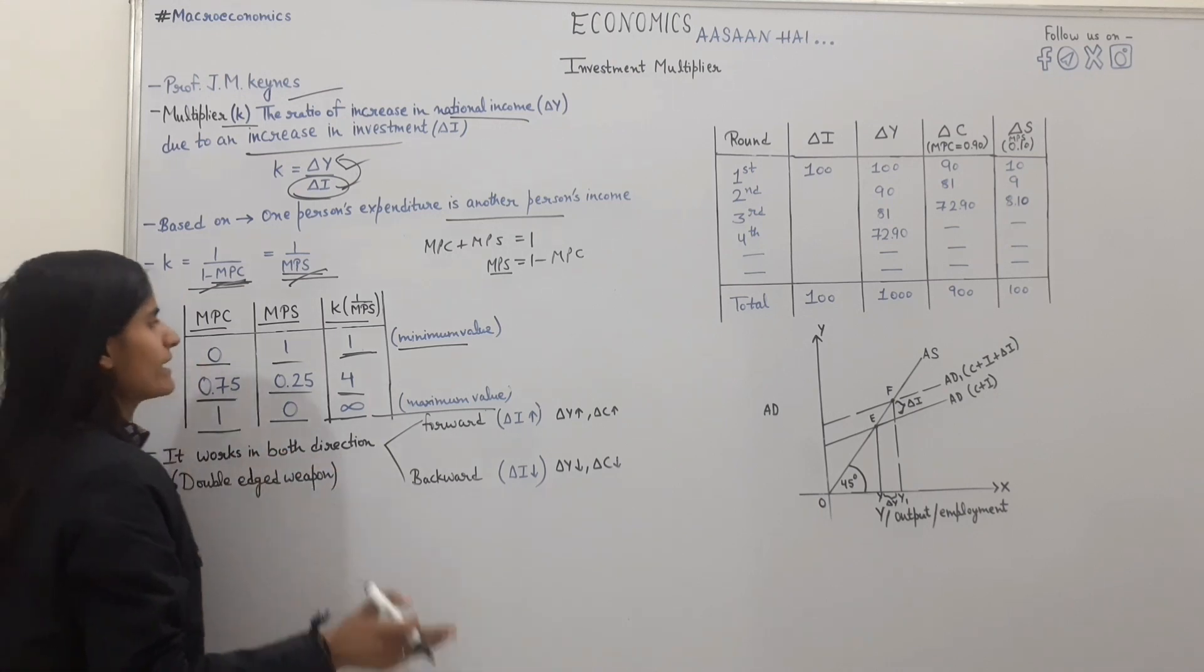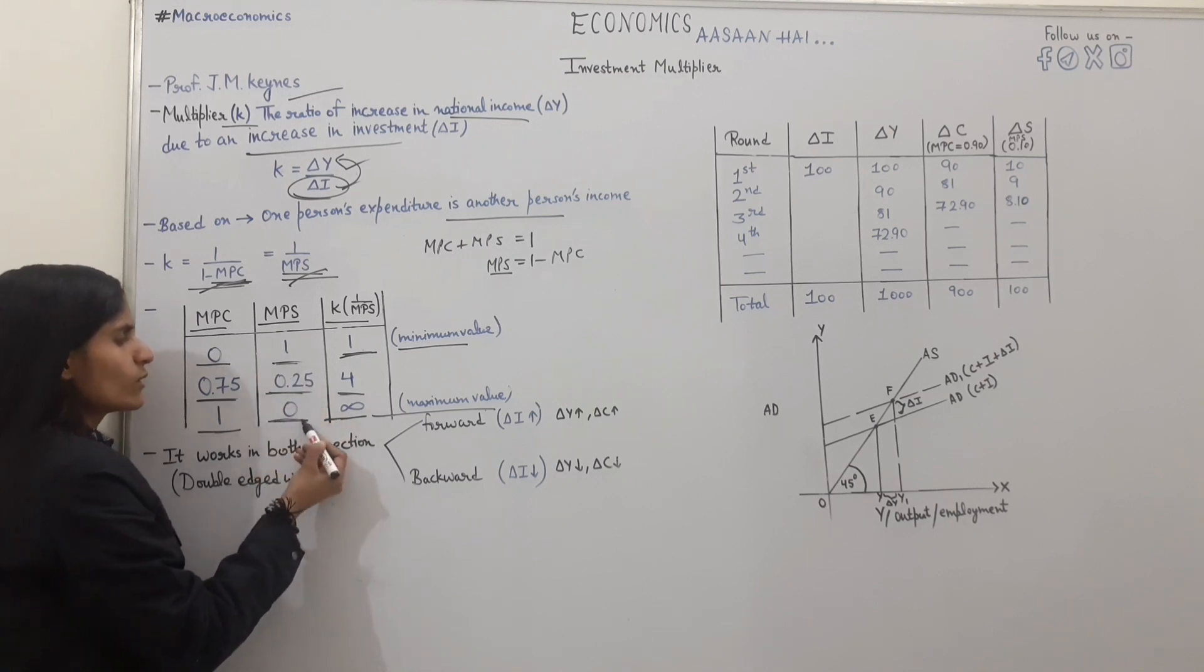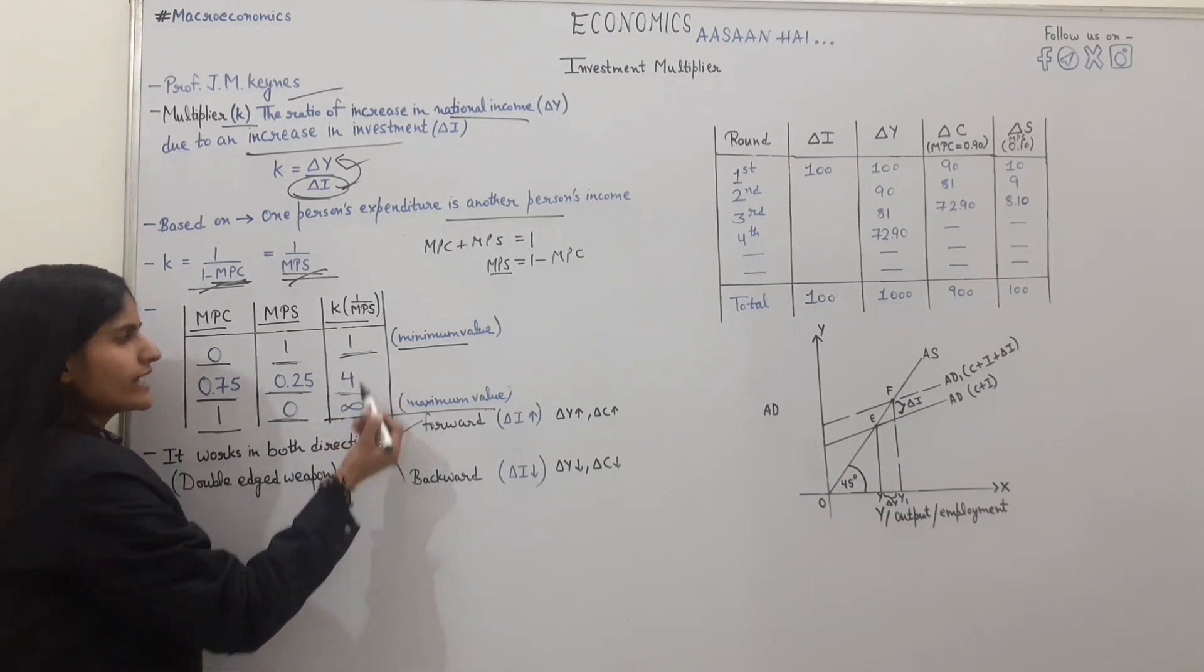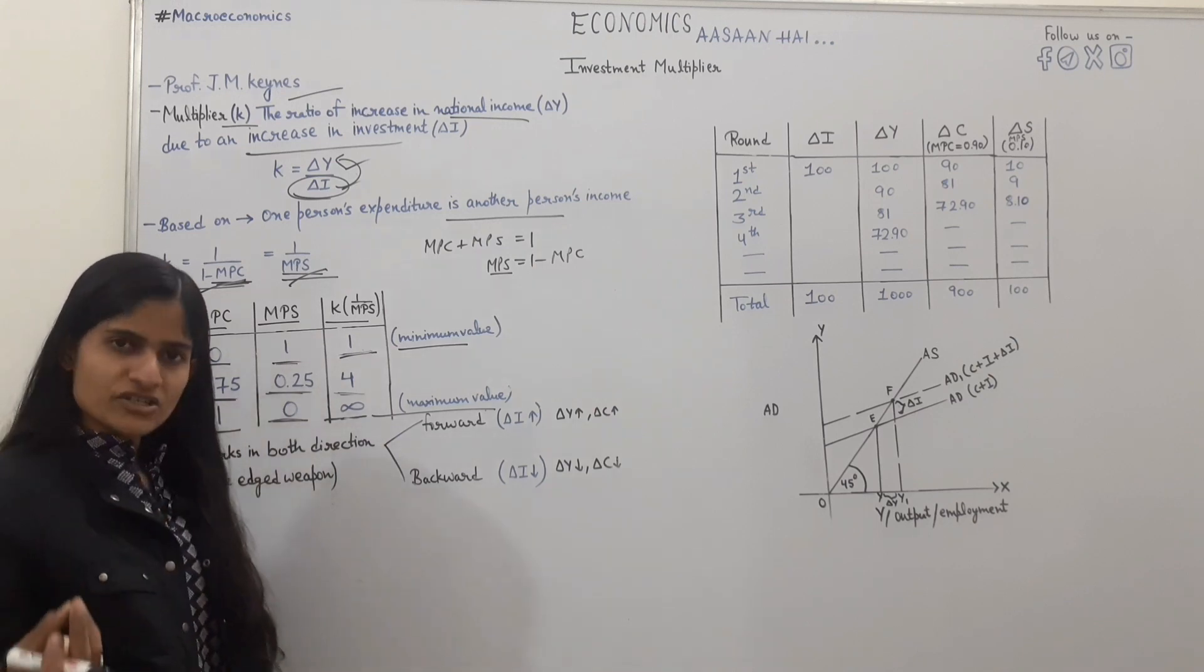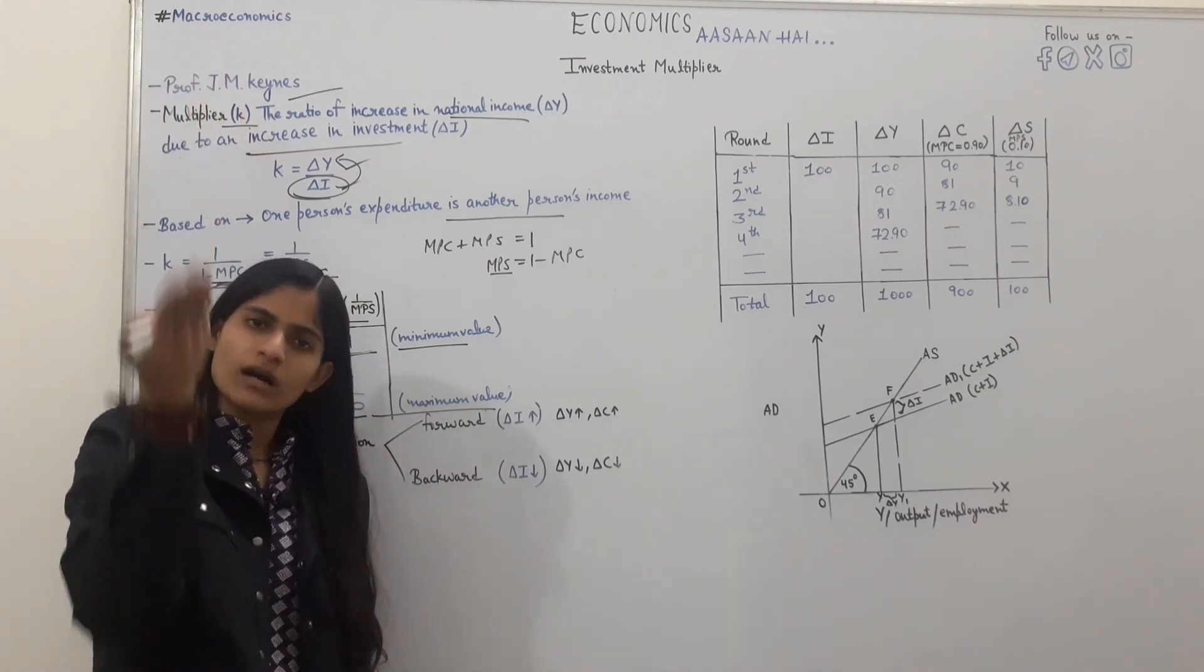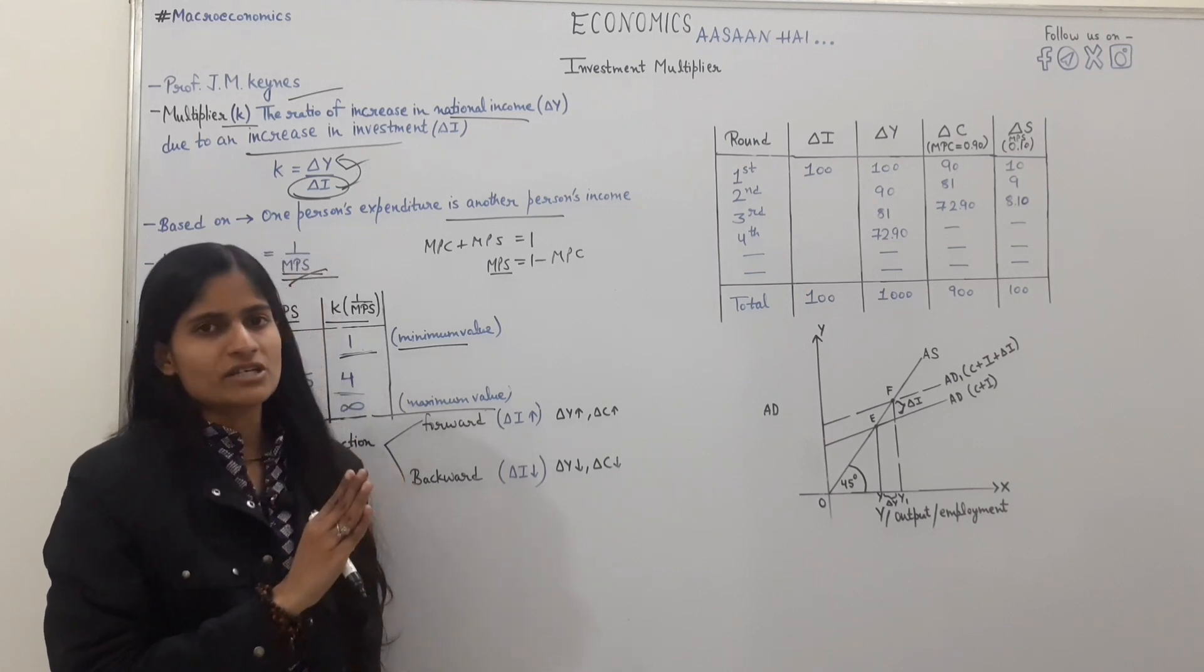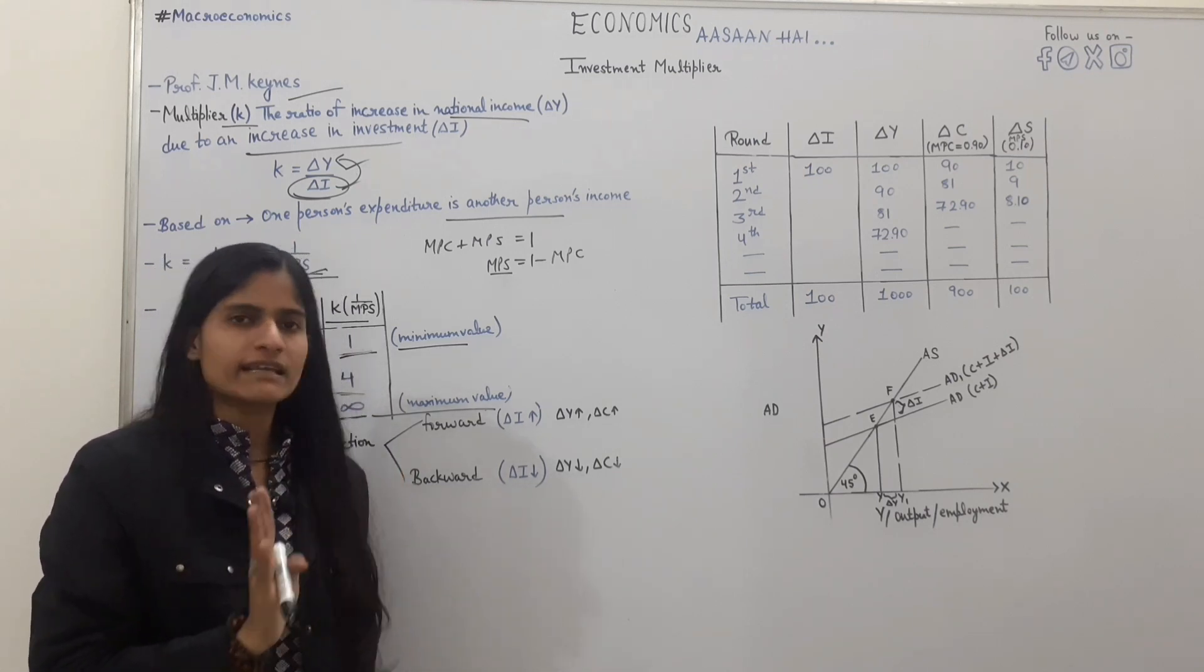MPS and K are related. MPS value is 1, 0.25 and 0. MPS value is 1, K value is 1. MPS value is 0.25, K value is 4. This means MPS and K have inverse relationship.